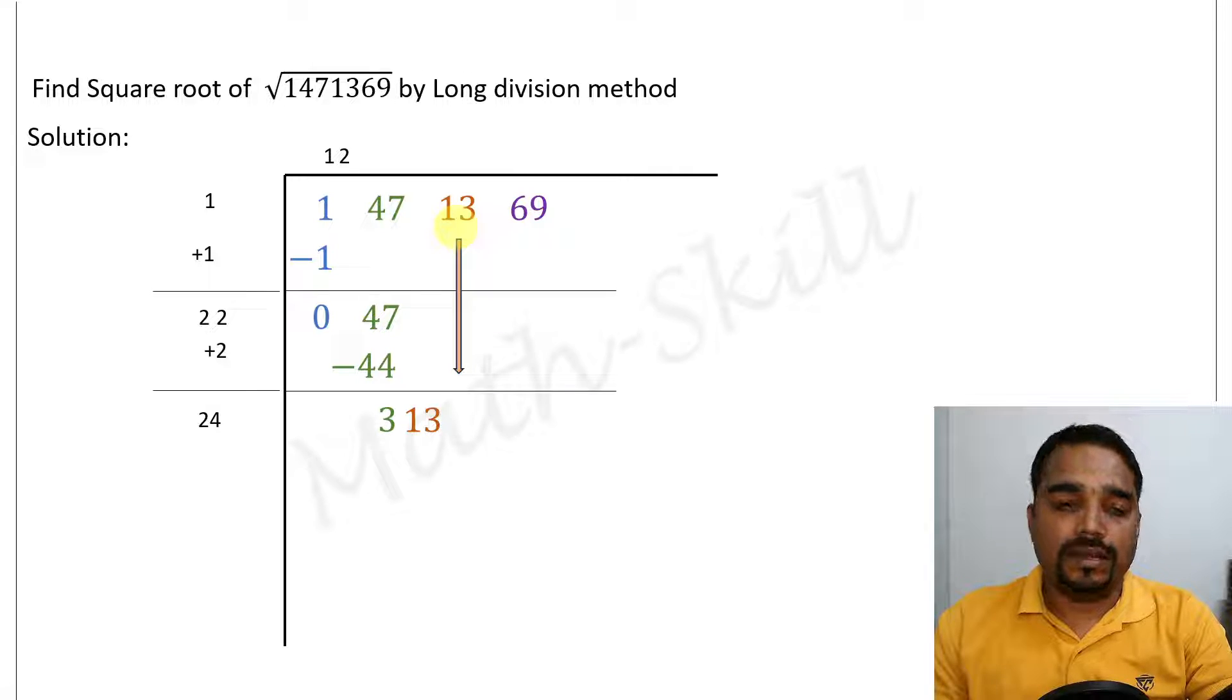Upon taking 13 down, it would become 313. Now we will have to add a digit in the units place of 24 to make it as a three digit number. So let us add 1. 241 multiplied by 1 is 241.